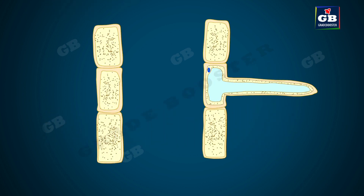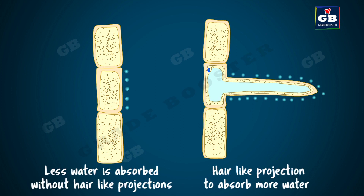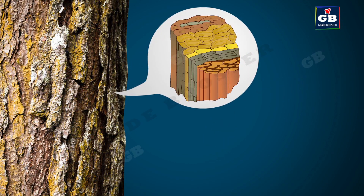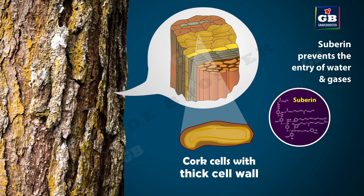The epidermis cells of roots bear long hair-like structures that greatly increase the total absorptive surface area, helping to absorb more water. In big trees, the epidermis on the stem surface is replaced with dead cork cells, which contain a chemical called suberin that prevents the entry of water and gases into the stem.